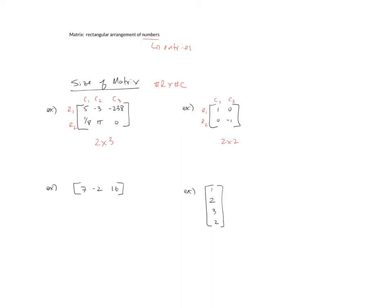Anytime the number of rows equals the number of columns, we call it a square matrix. The third example: here we have row one, column one, column two, column three, so a one by three. A matrix that has only one row is called a row matrix.